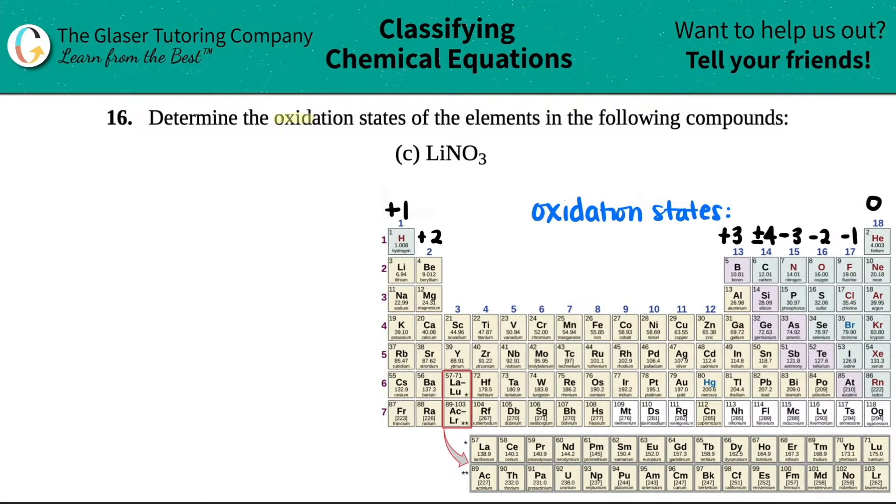Number 16, determine the oxidation states of the elements in the following compounds, and then we have C out of the bunch. So we have to find out the oxidation states of each element in lithium nitrate, LiNO3.